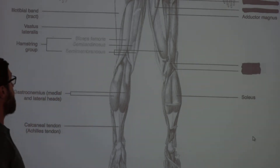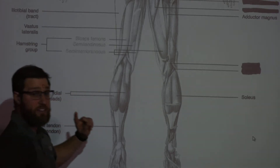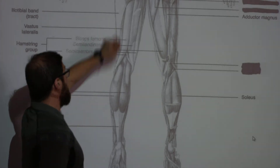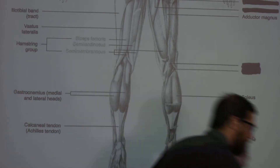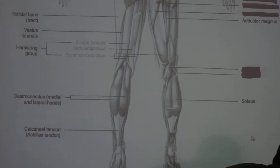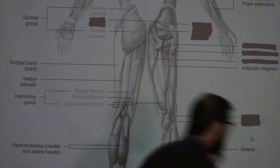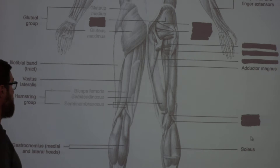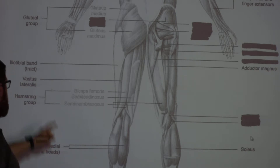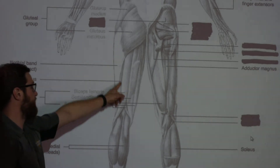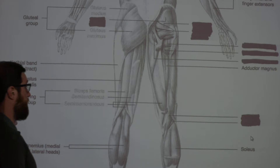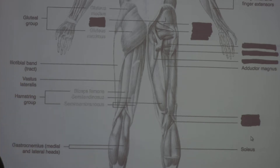A few others here — these are some repeats. We've got your IT band, your adductor magnus poking through on the posterior side, and the vastus lateralis poking through — which is really an anterior quadriceps group muscle.